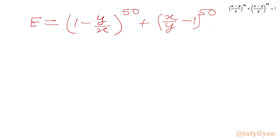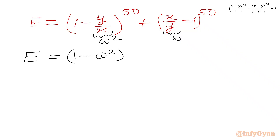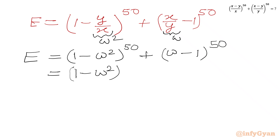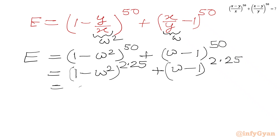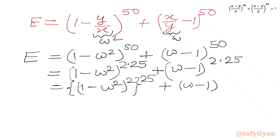Putting x/y as omega and y/x as omega squared, expression E becomes (1 minus omega squared)^50 plus (omega minus 1)^50. We can split the exponent 50 as 2 times 25, so we write (1 minus omega squared)^2 whole power 25 plus (omega minus 1)^2 whole power 25. Now applying the identity (a minus b)² to expand each term.